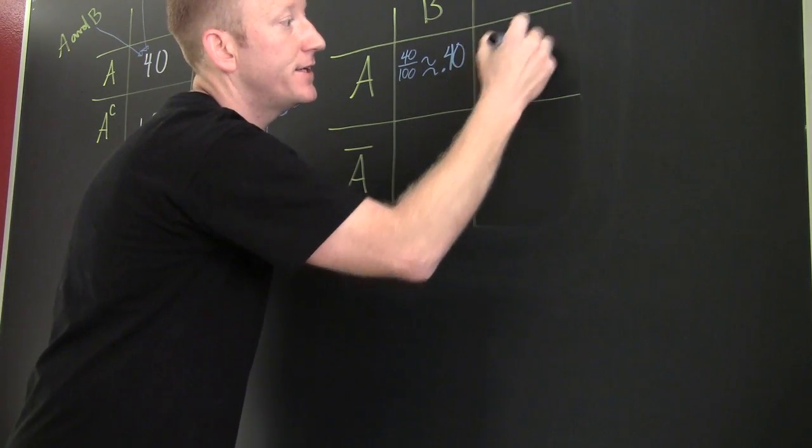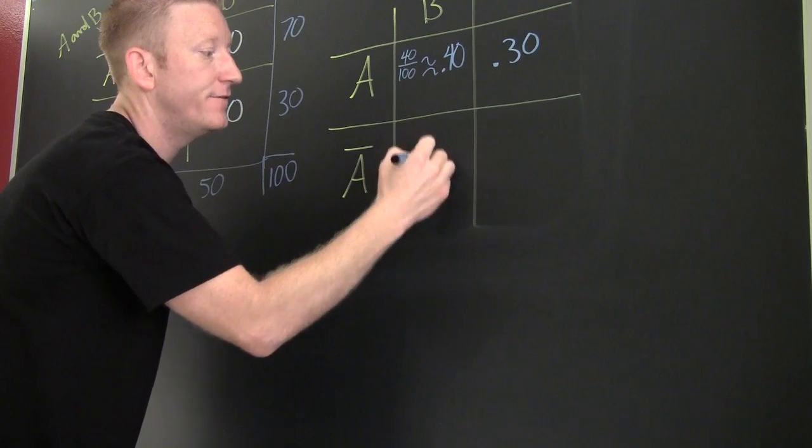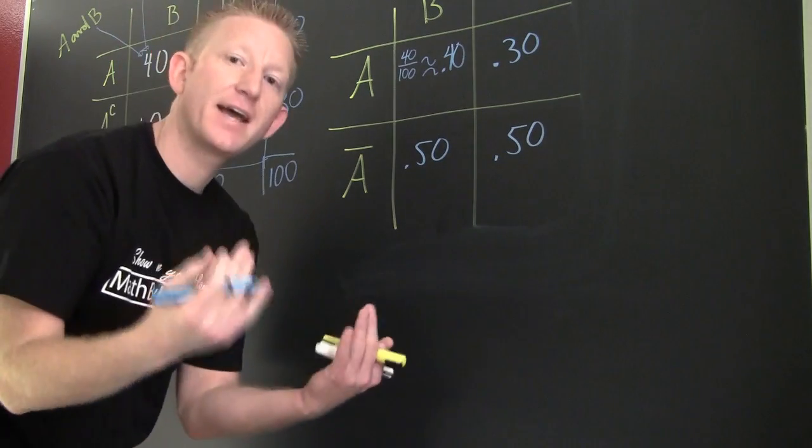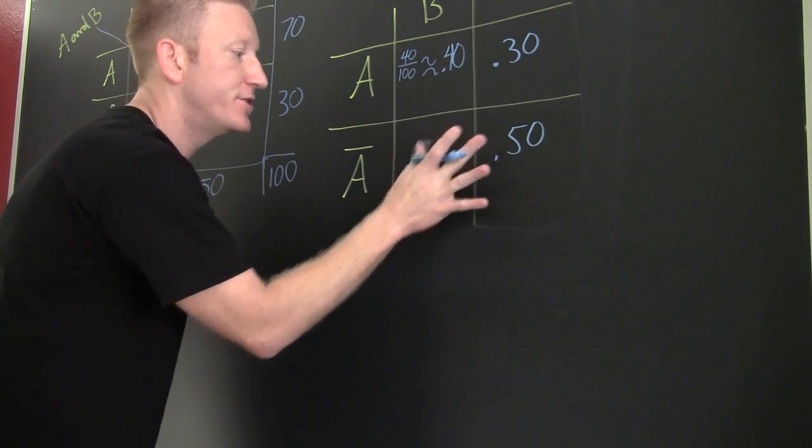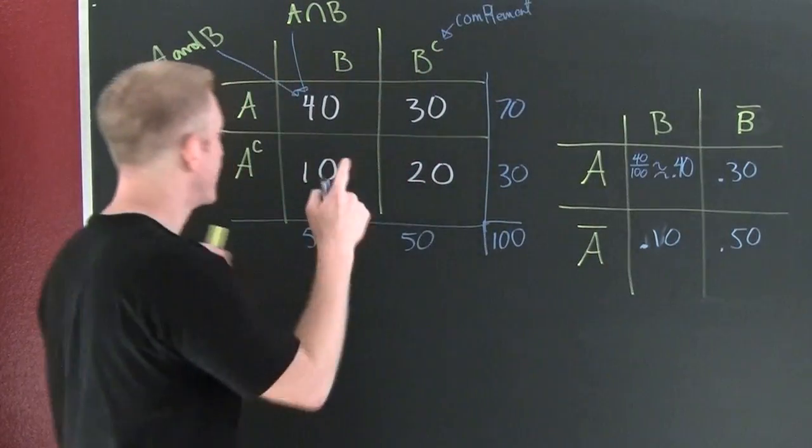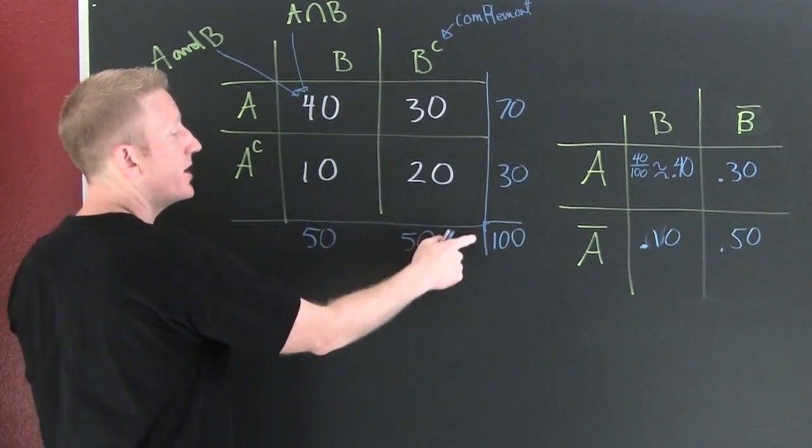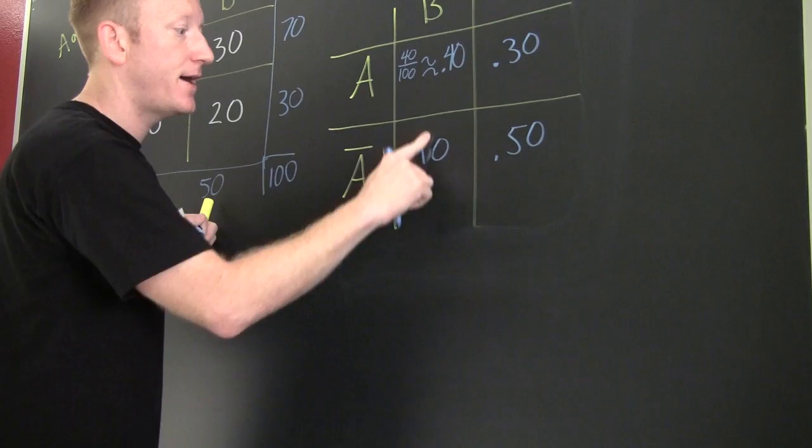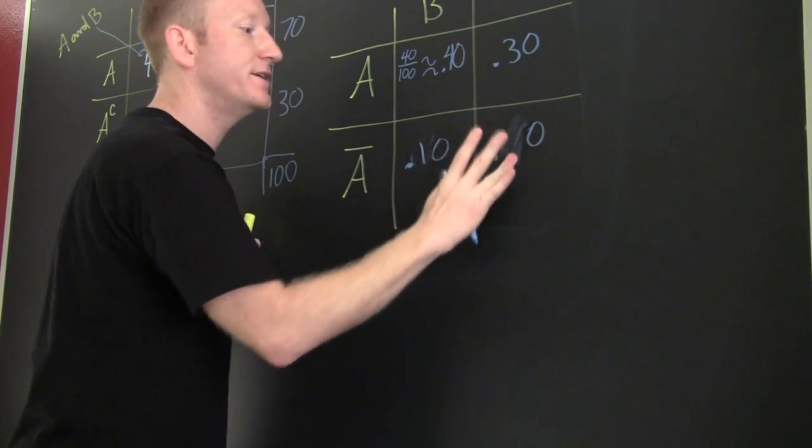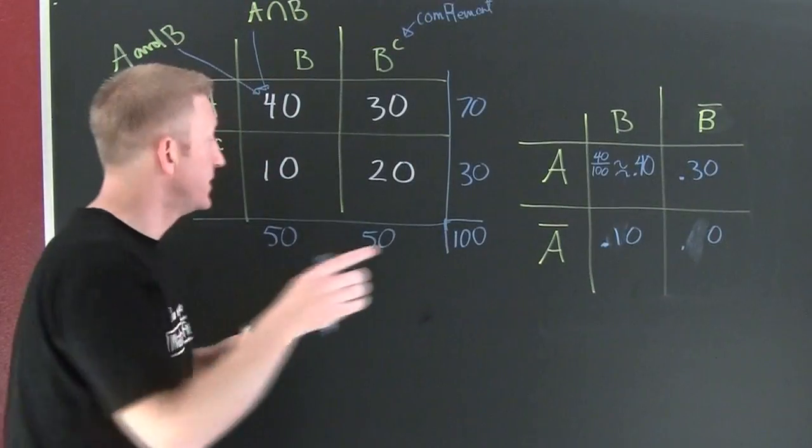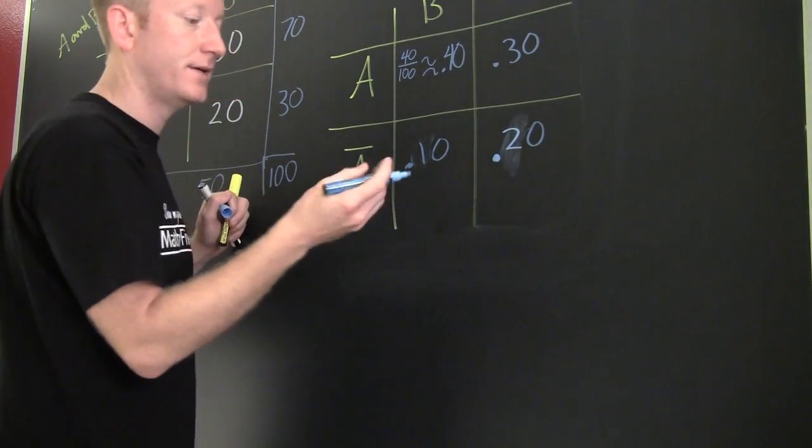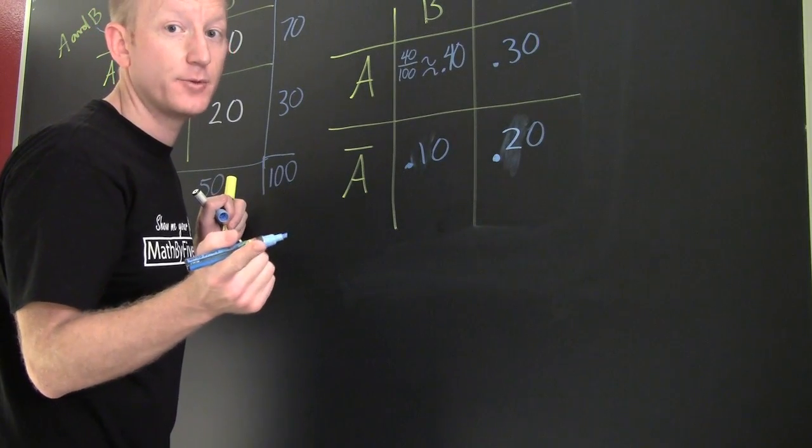And similarly, this is 30 hundredths. And this one down here, this is 50 hundredths. And this one is also 50—nope, just kidding. Back that stat up. What should this be? This should be 10. Why? Because if we look back in this one, we had 10 things in our original, and then 10 divided by 100 is a tenth. And then down here, this is not 50. Come on, what should this be? Back up here in our original, this was 20. So this was 20 hundredths, or 0.2.